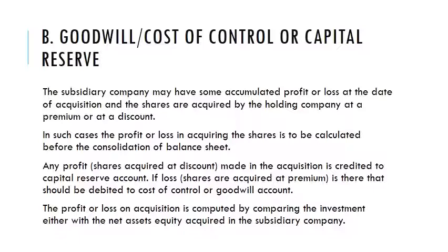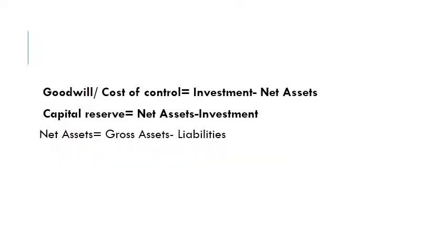The profit or loss on acquisition is computed by comparing the investment with the net assets — that is, the equity of the subsidiary company. Investment and net assets are compared. Net assets is equal to gross assets minus liabilities, which equals total assets minus liabilities.